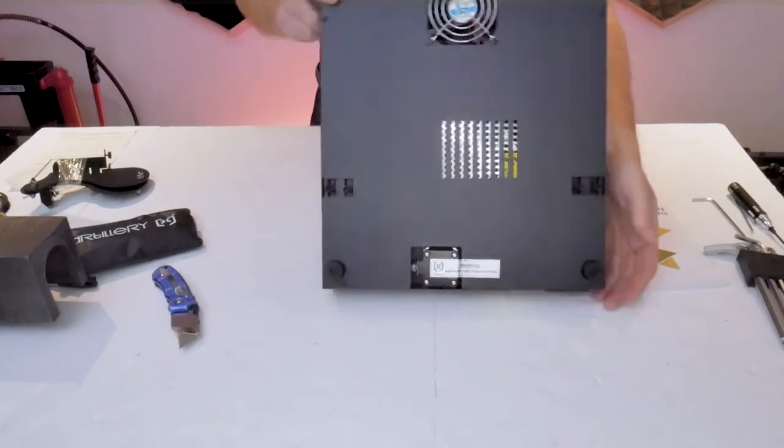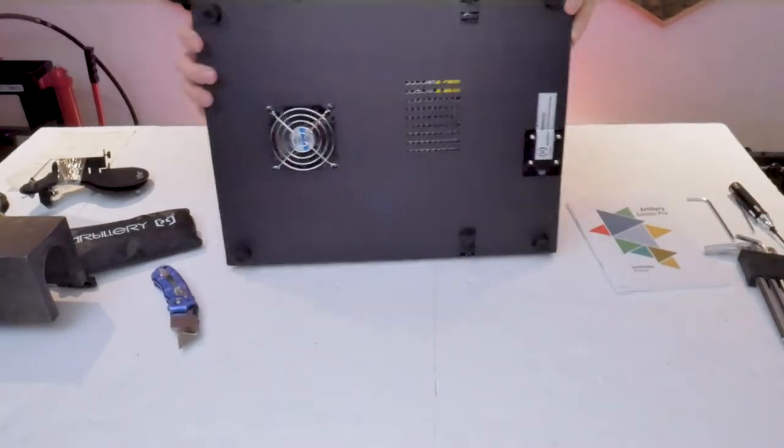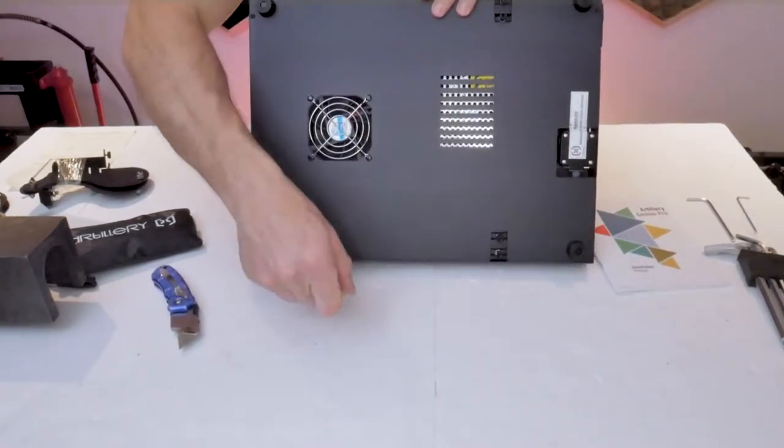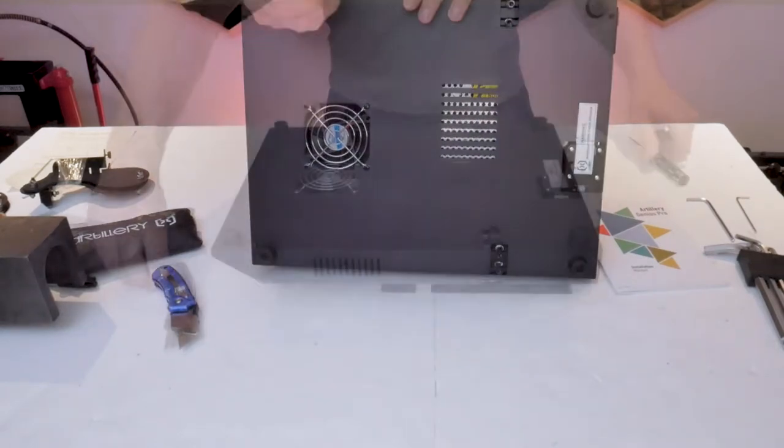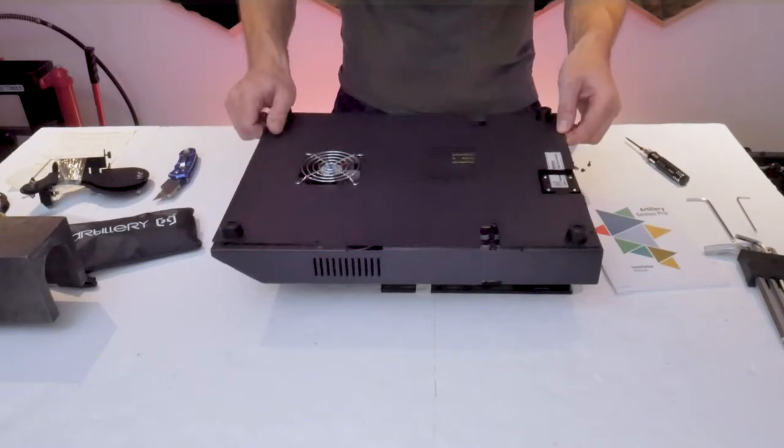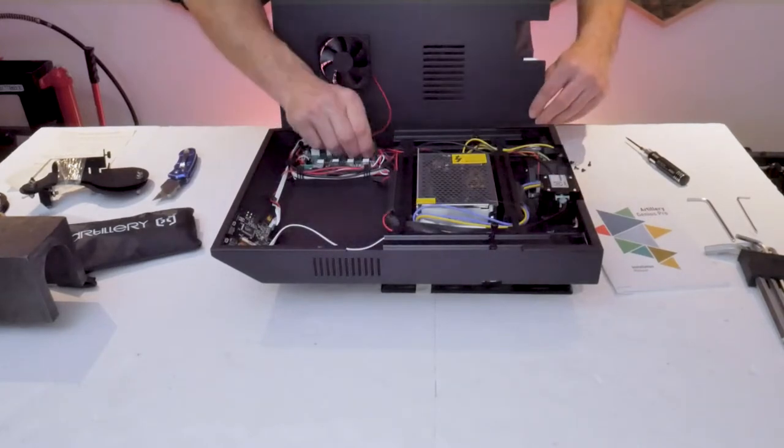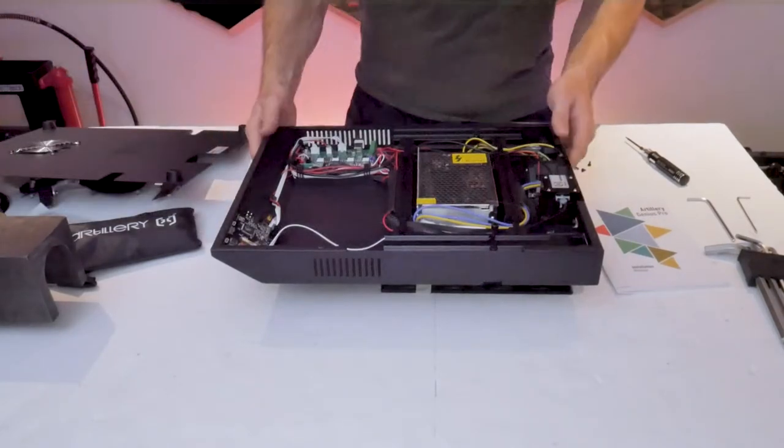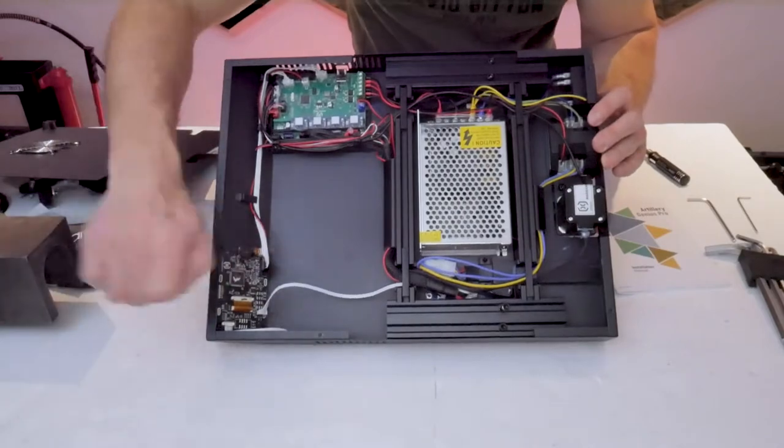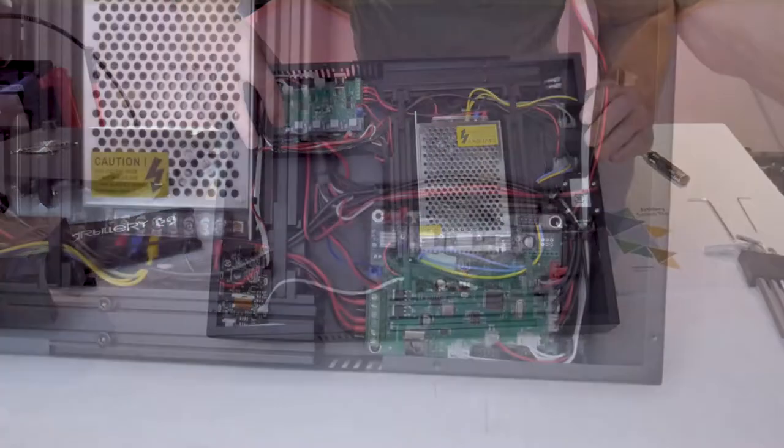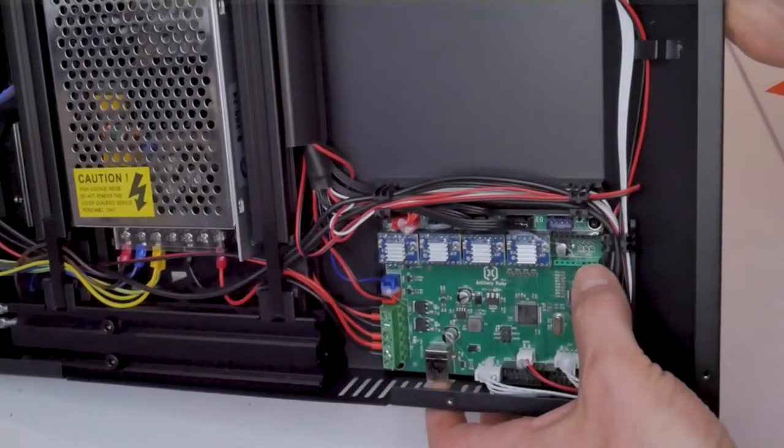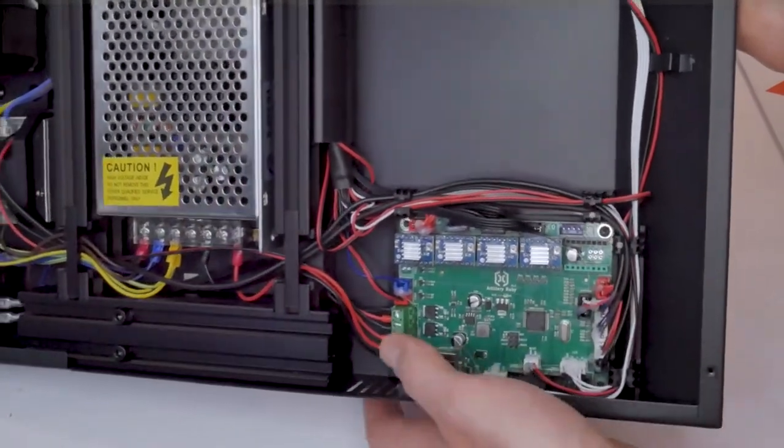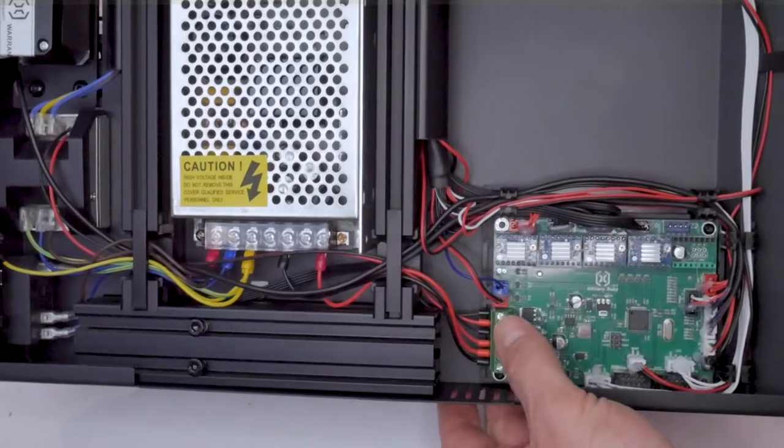Before getting to the assembly the very first thing I like to do with any new printer I get is void the warranty, so I'll cut that label and we'll take a look at the electronics inside. Upon first inspection everything looks quite nice inside, well organized and neatly wired. We'll take a closer look now at the 32-bit main control board. You can see here all of the stepper drivers. I could not find any specific information about them online but they are silent drivers and they do seem to do the trick.